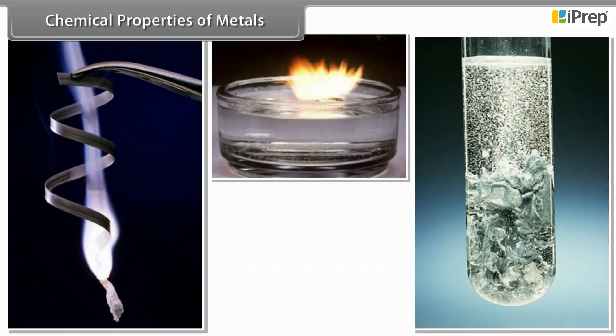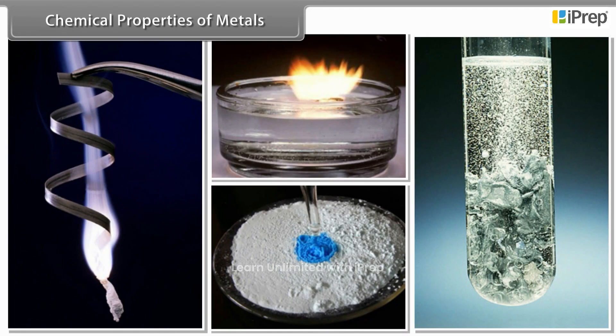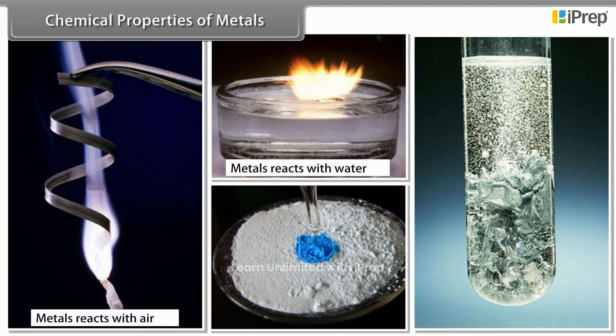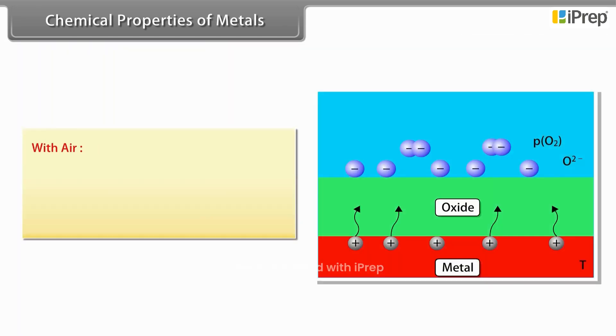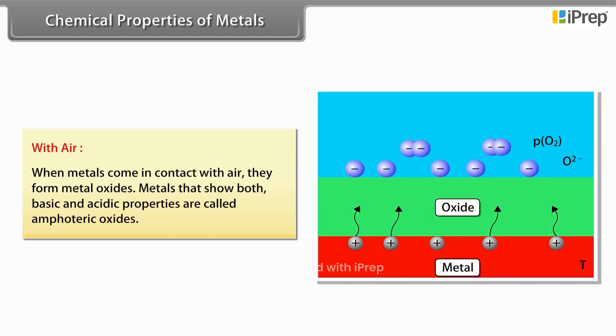Chemical properties of metals. Let us look at some chemical properties of metals. These properties include reactions of metals with other elements, that is air, water, acids, and other metal salts.